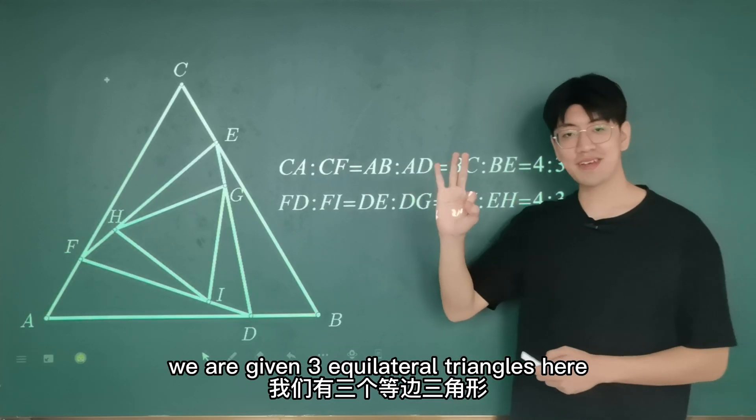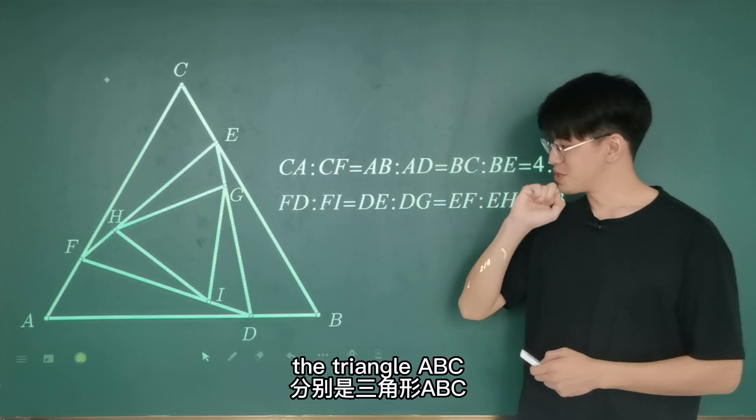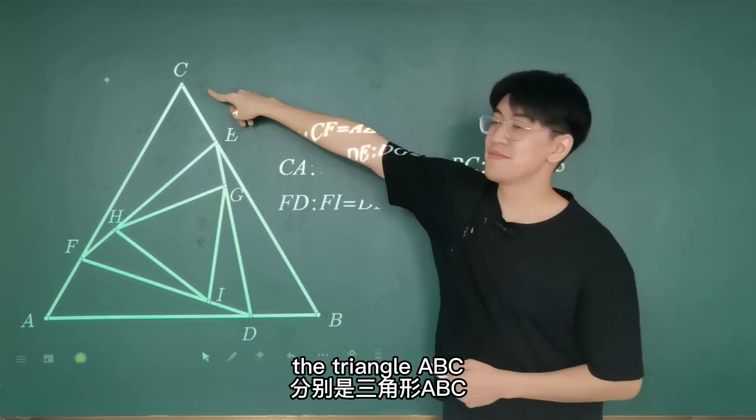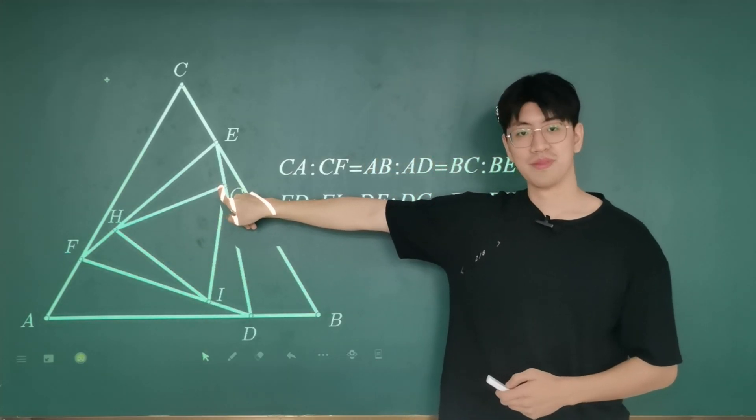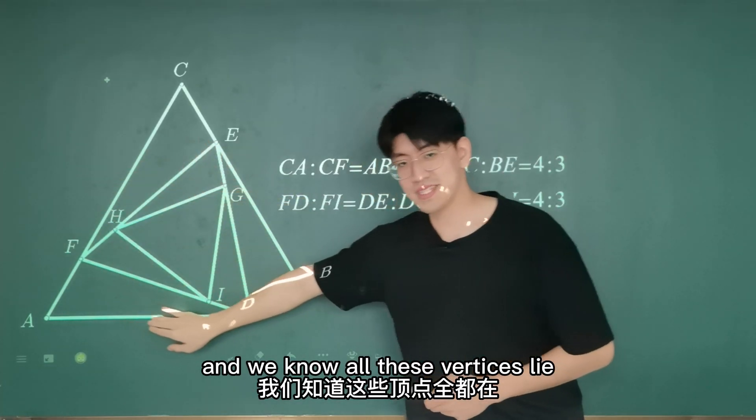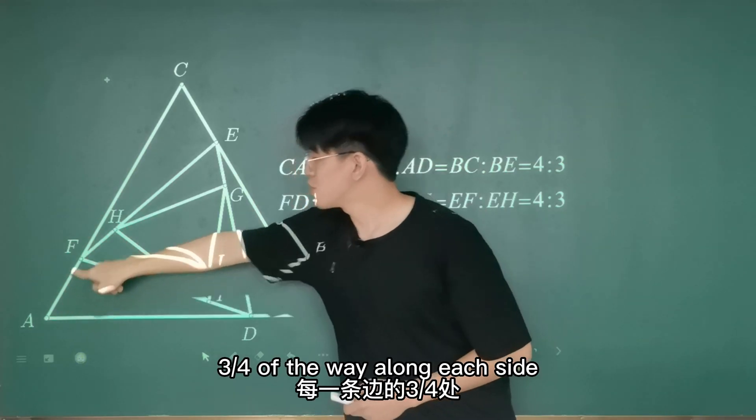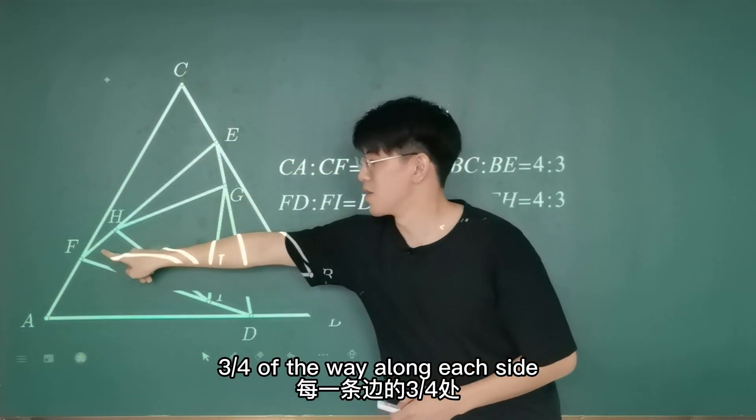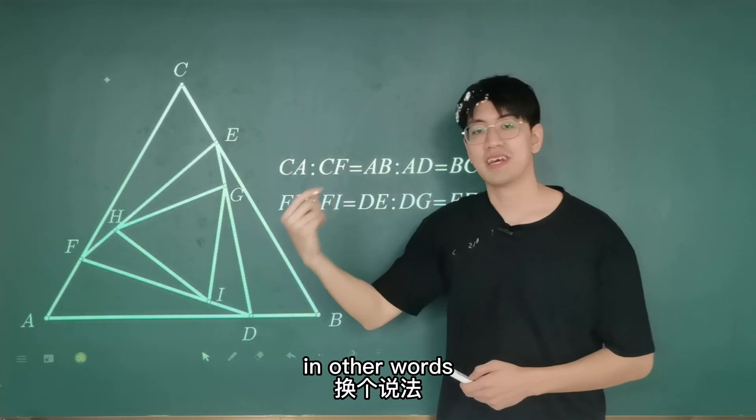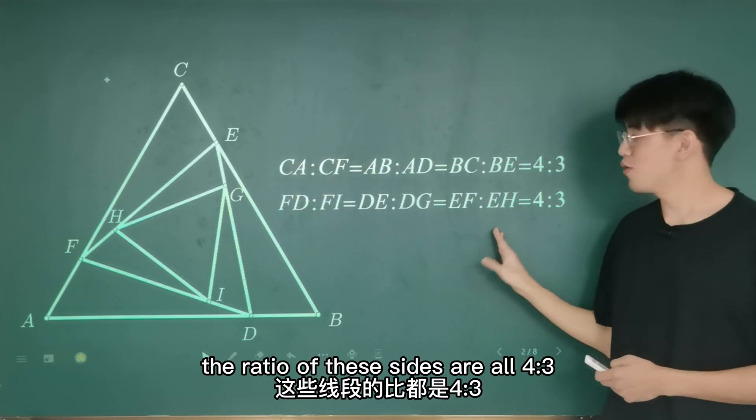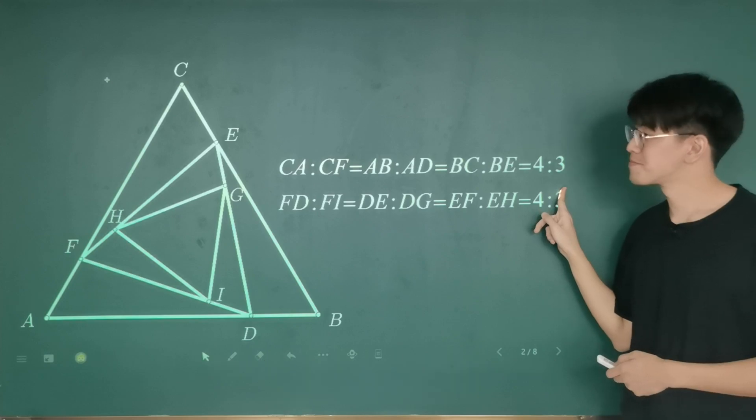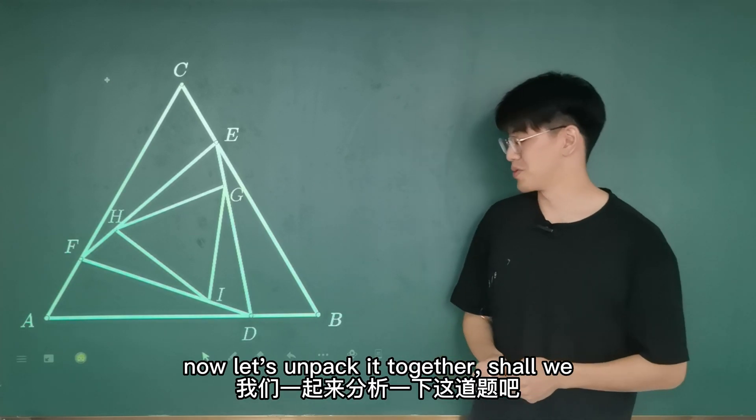We are given three equilateral triangles here: triangle ABC, triangle FDE, and triangle HIG. We know all these vertices lie three-quarters of the way along each side. In other words, the ratio of these sides are all 4 to 3. Now let's unpack it together, shall we?